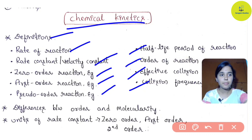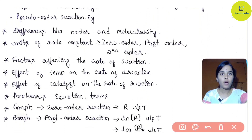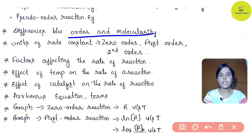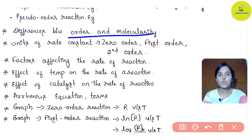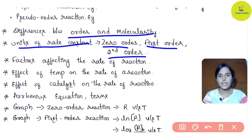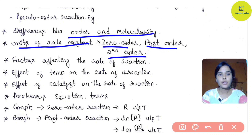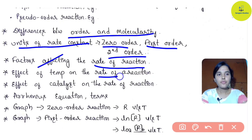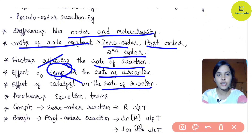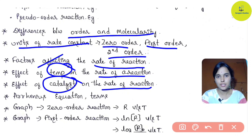Next most important topic in Chemical Kinetics: difference between order and molecularity - very very important. This has appeared three times in previous years. Temperature effect on rate of reaction and catalyst effect - these carry two or three marks chances in the second test.